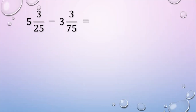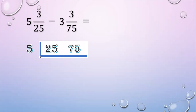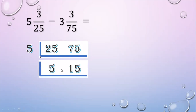Another example. 5 and 3 over 25 minus 3 and 3 over 75. First, get the LCD: 25, 75. Divide by a prime common factor of 5. 25 divided by 5 equals 5; 75 divided by 5 equals 15. Then 5 and 15 have a common factor of 5. 5 divided by 5 equals 1; 15 divided by 5 equals 3.